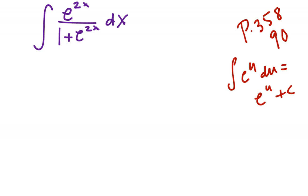Well, hmm, do I have an e to the u scenario? It looks like I have the denominator, let's call the denominator u. So that's 1 plus e to the 2x.